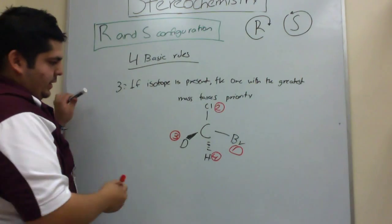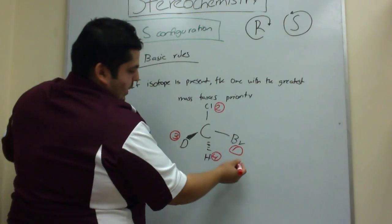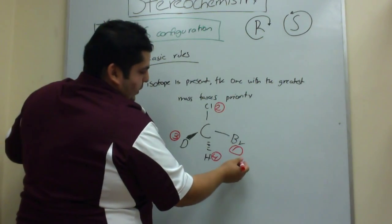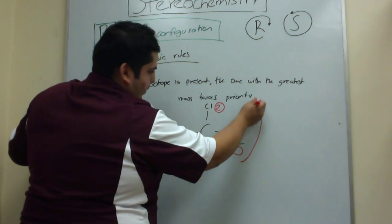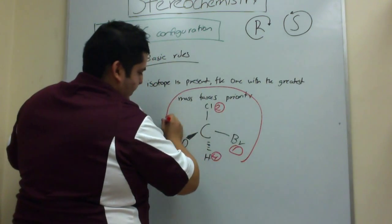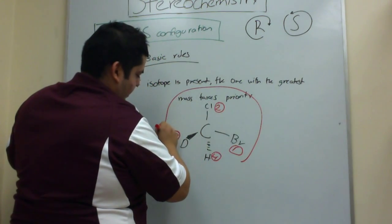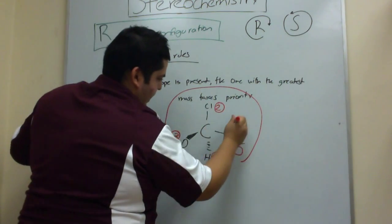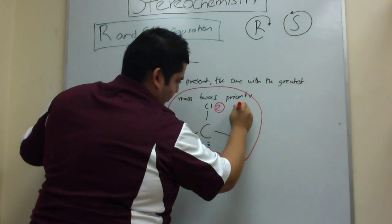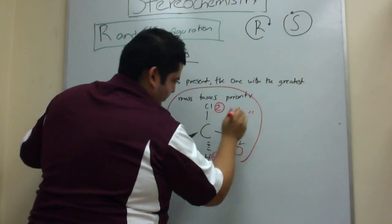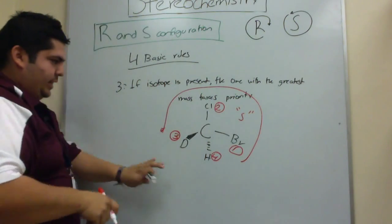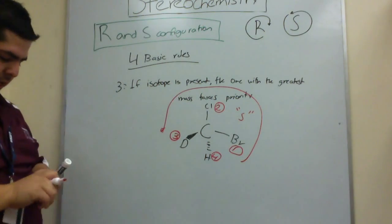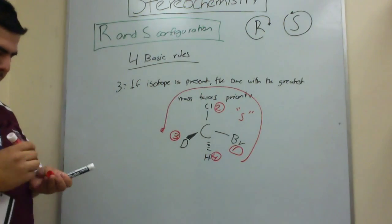Then we start from number one and go around — this would be an S molecule. This molecule has the S configuration.